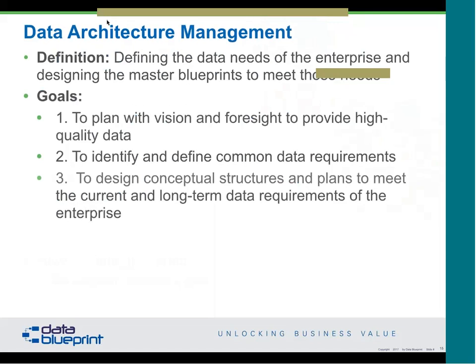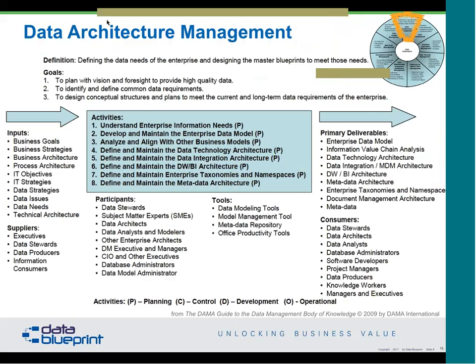The definition of architecture management is: defining the data needs of the enterprise and designing master blueprints to meet those needs. In our DIMBOK we have an input-process-output diagram for each chapter. The primary activities include: understand enterprise information needs, develop and maintain the enterprise data model, analyze and align other business models, maintain the data technology architecture, the integration architecture, the DWBI architecture, and enterprise taxonomies, namespaces, and metadata.